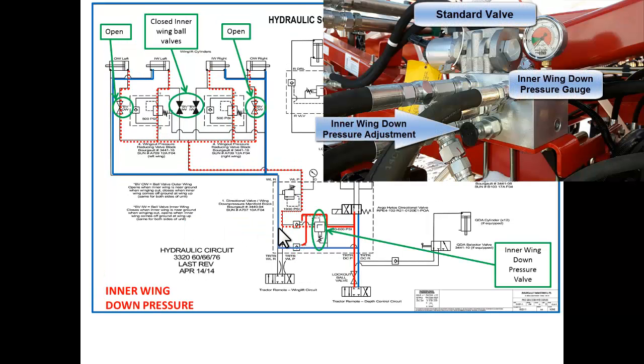The inner wing down pressure valve is manually adjusted from 0 to 600 psi. Manual adjustment on the valve.